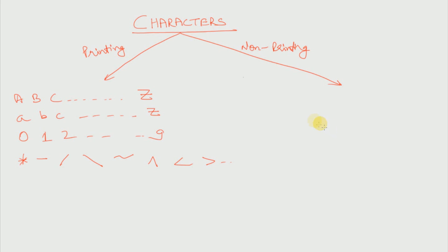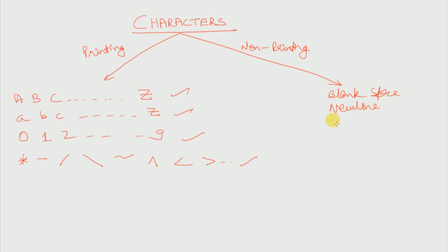So the printing characters are basically of four types: the uppercase characters, the lowercase characters, the digits from 0 to 9, and the special characters. Now, what about the non-printing characters? A blank space is a non-printing character. Another one is a new line — when we press Enter it goes to a new line and it's non-printing because it is not shown on screen. Another one is a beeping sound — it is not printed but we can hear it.